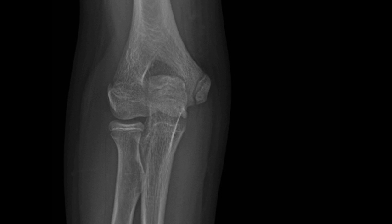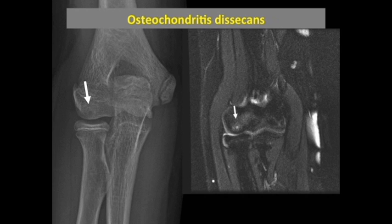Let's look at another case. This is also a subtle lesion, but it's a common lesion that you want to train your eye to identify in children. Usually these children come with a history of chronic elbow pain. If you look closely, you can see there's a lucent and sclerotic lesion at the capitellum. This is osteochondritis dissecans, another common pediatric lesion, more clearly identified on a fluid-sensitive coronal MR image.